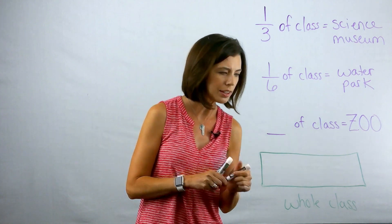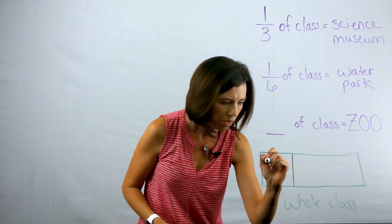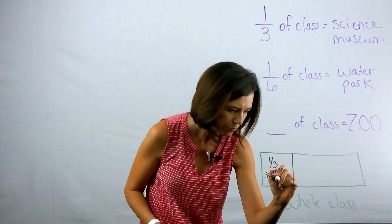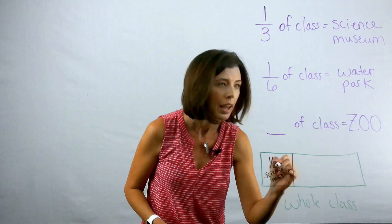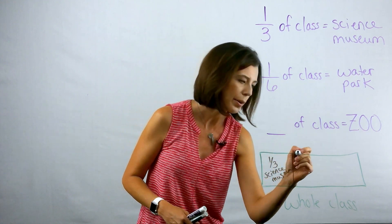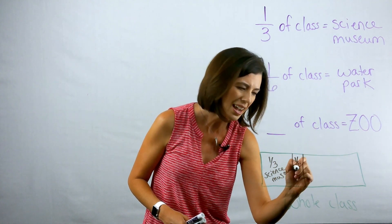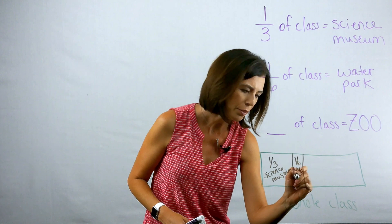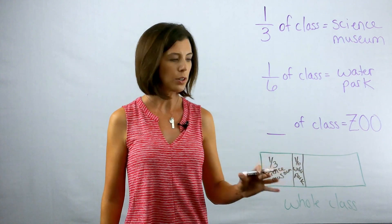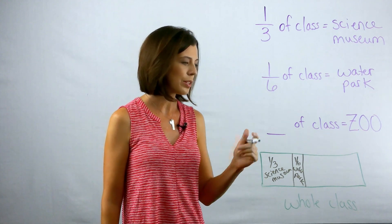So I know that a third of the class wanted the science museum. This one-third wanted the science museum. I know that one-sixth of the class wanted the water park. Let's just say that's about a sixth. It's not important that you're perfectly drawing these or perfectly separating your rectangle. What's more important is that you are getting an idea of what operation you need to use.